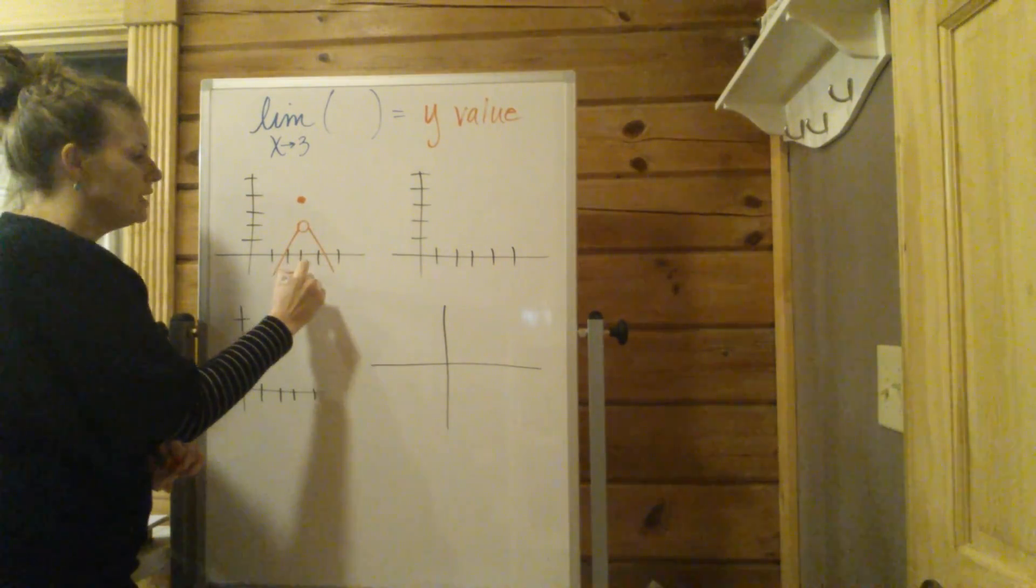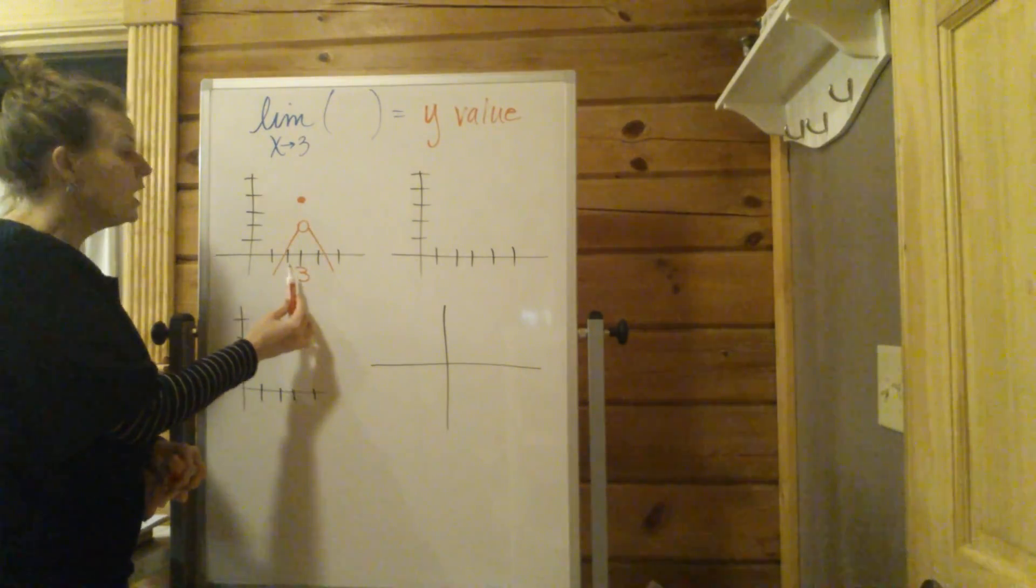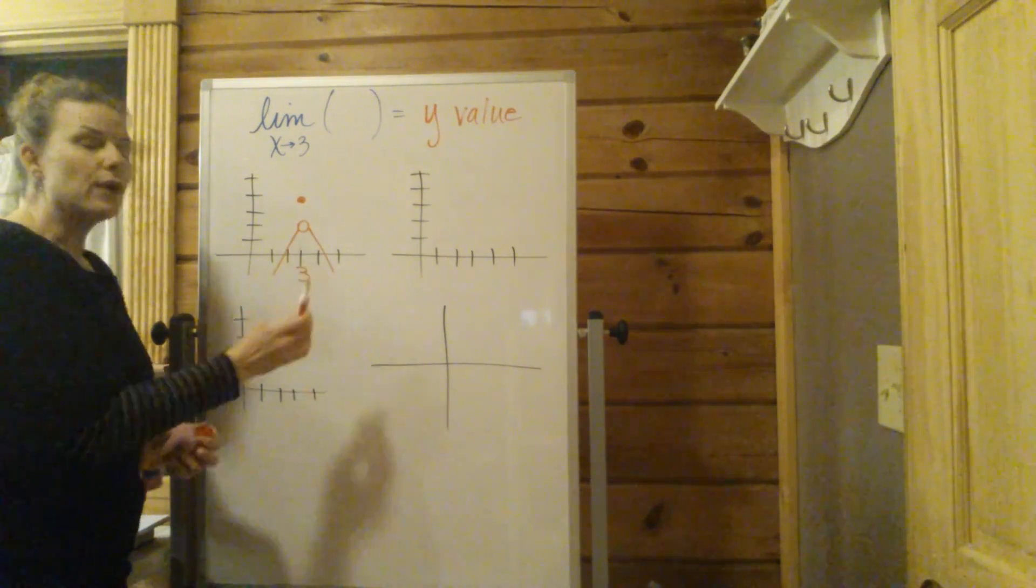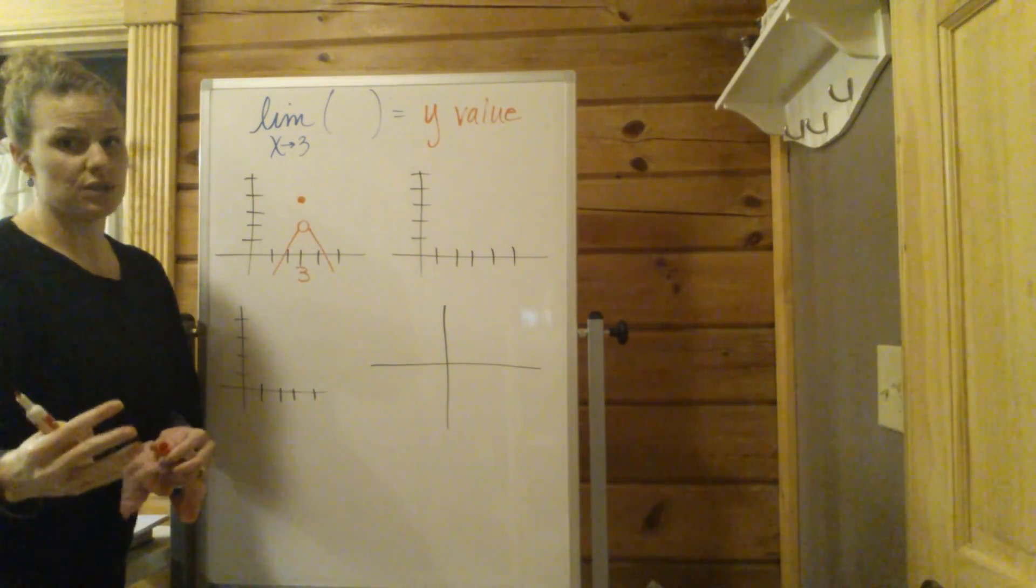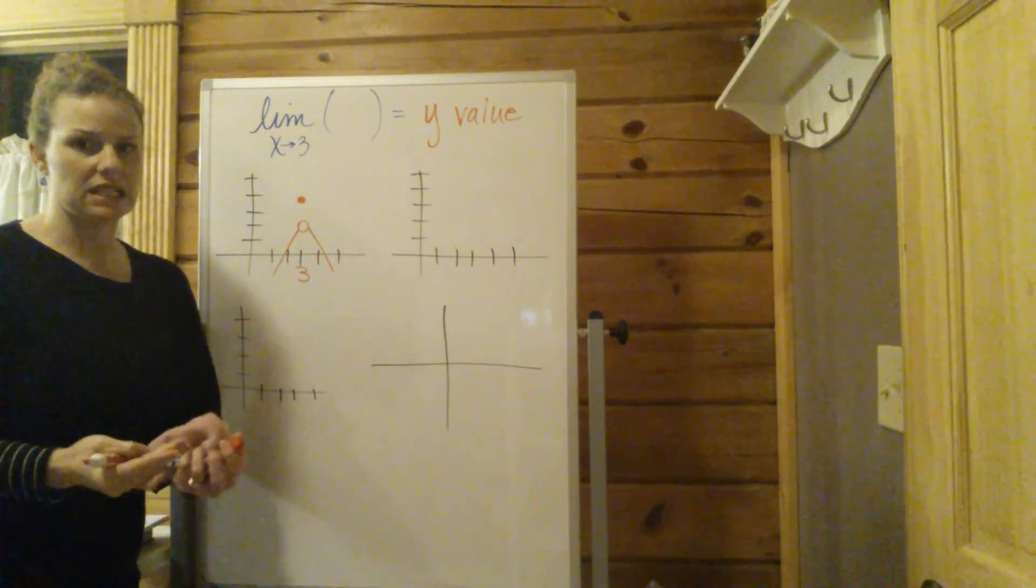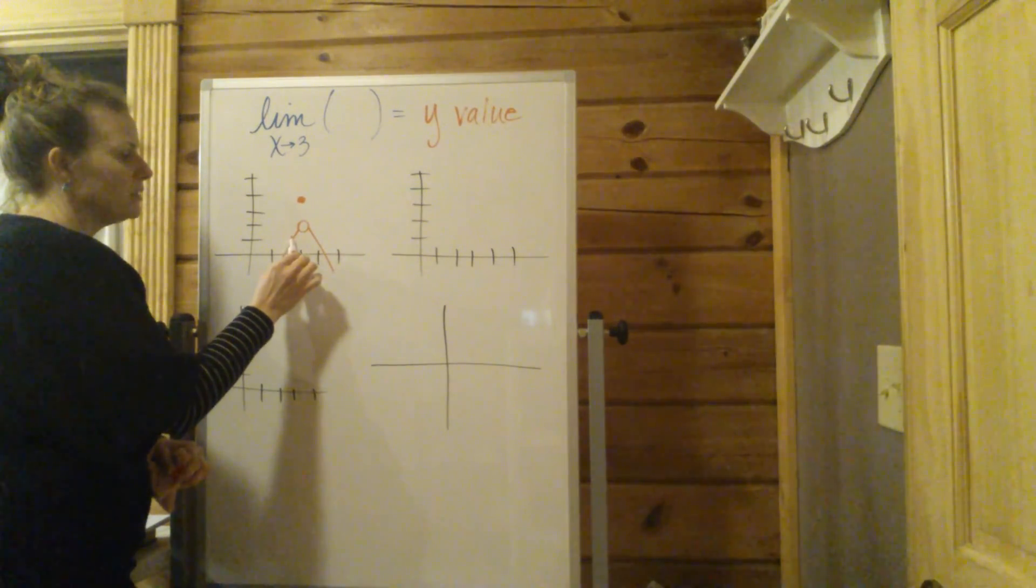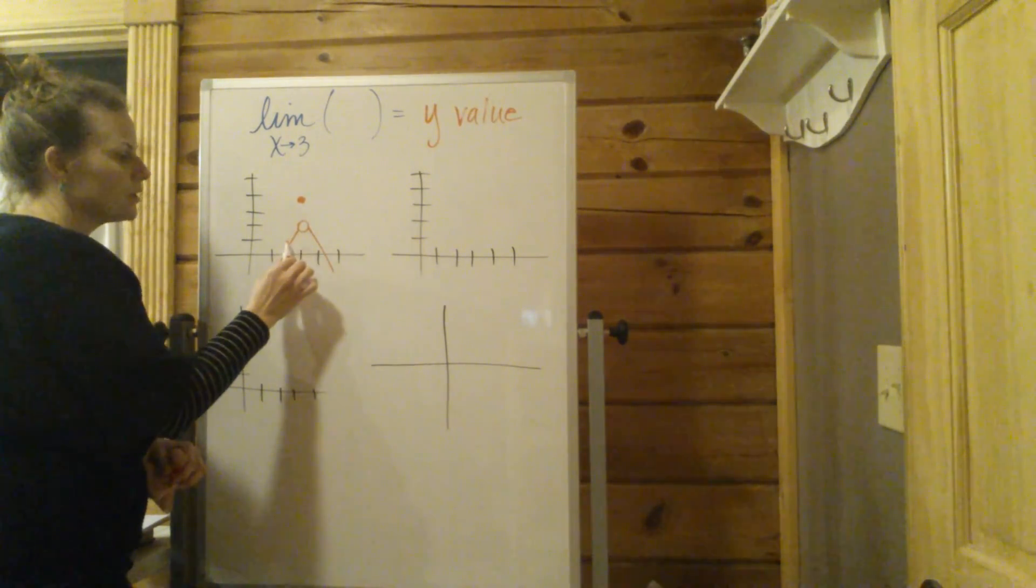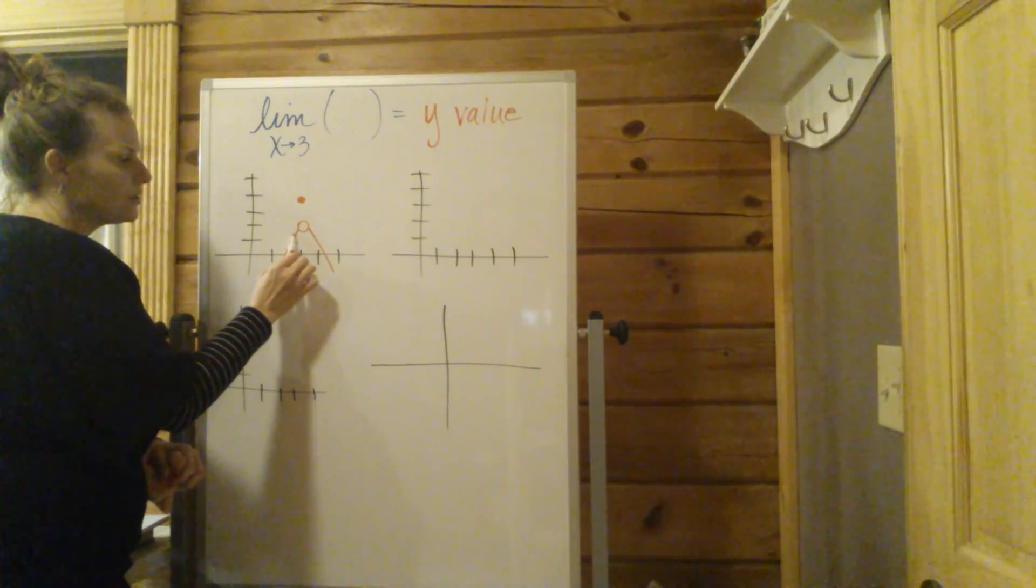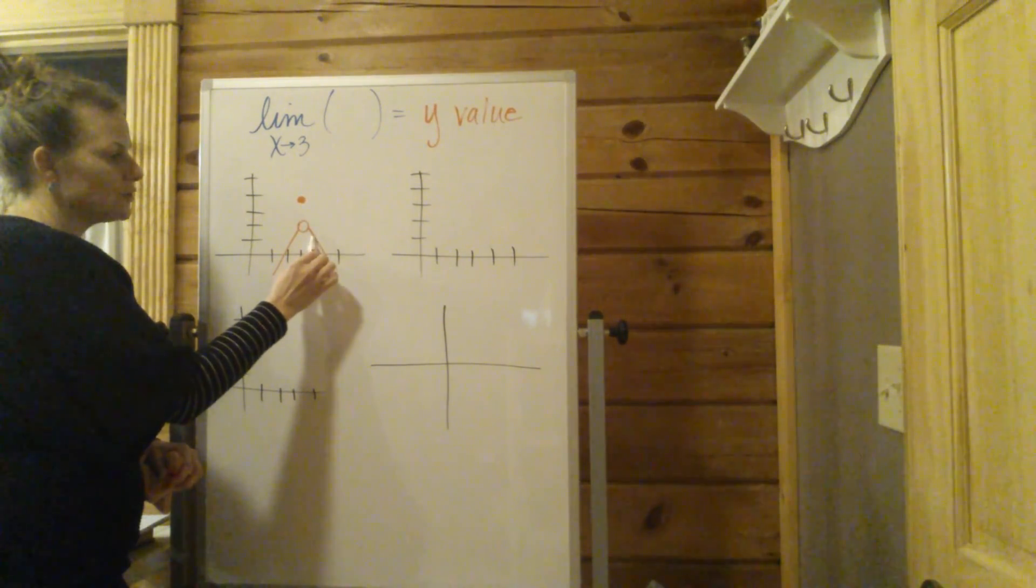This was the example I've shown before. If we highlight the x value of 3, and remember we don't care about what happens when x equals 3, we only care about the vicinity around the x value of 3. As we're approaching on this curve from the left, the y values are approaching, as x is getting closer and closer to 3, the y values are approaching what? From both directions.